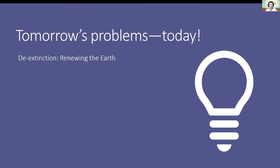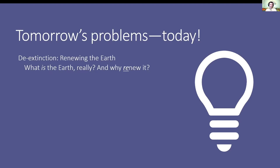Ethical concerns with de-extinction: where do we put them? There's a reason we killed all the passenger pigeons — it may have been a dumb reason — but where do we put them now? Will rhinos be killed off again? Are we mostly doing a service to poachers if we de-extinct rhinos? This connects to the idea of renewal and returning to a prior state. Is a prior state of the earth valuable inherently? Do we have a responsibility to return things to a prior state?